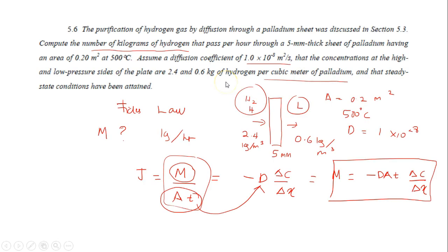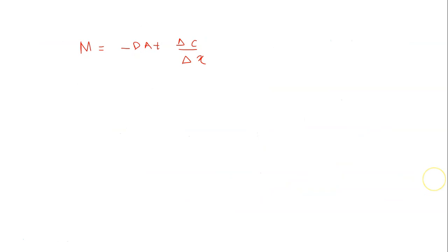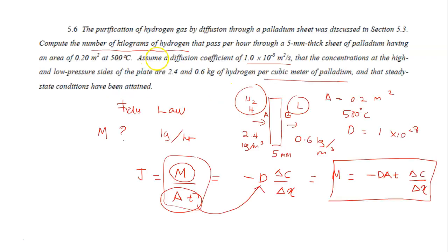Let's rewrite that equation again. M equals to negative D A times Δc over Δx. Let's look at the previous slide. In this case, I would call this side A and this side B, because you know that Δc is cₐ minus cᵦ and Δx is xₐ minus xᵦ.